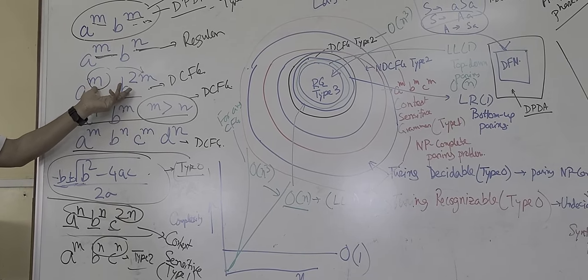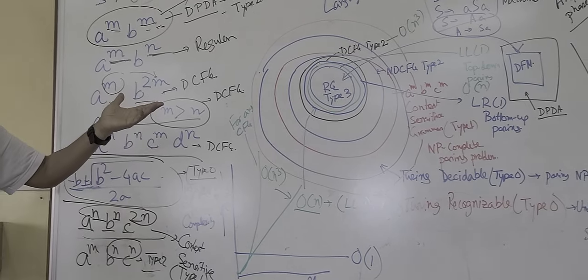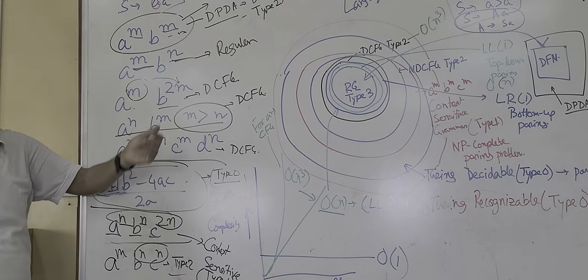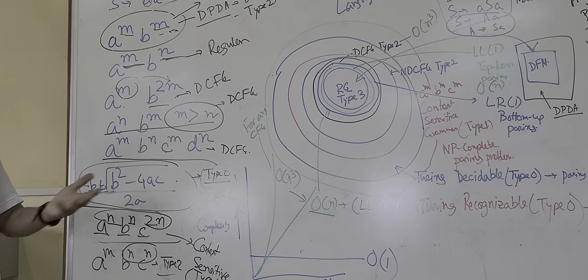So this is how to determine. From the string, how to understand which language it can be. Because there is a relation A and 2A, so it must be deterministic context-free grammar or deterministic pushdown automata.